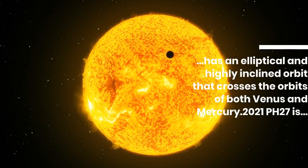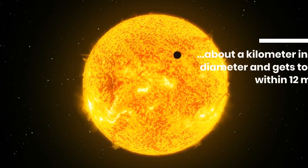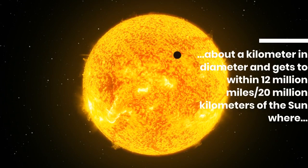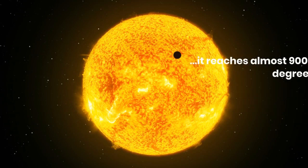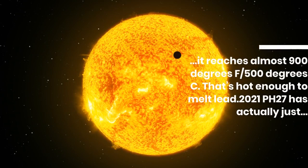2021 PH27 is about a kilometer in diameter and gets to within 12 million miles or 20 million kilometers of the Sun, where it reaches almost 900 degrees Fahrenheit or 500 degrees Celsius. That's hot enough to melt lead.